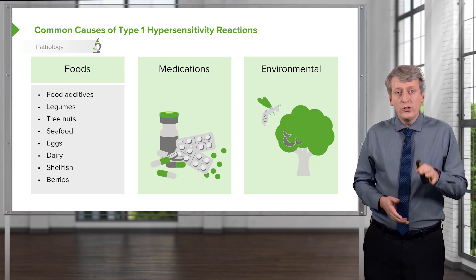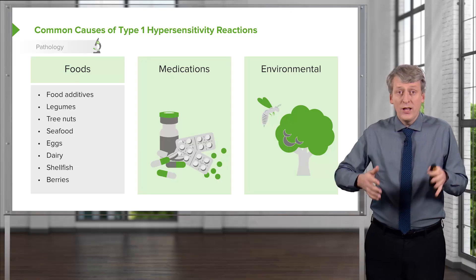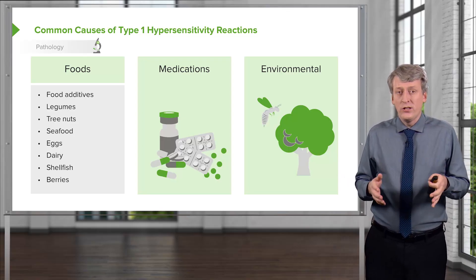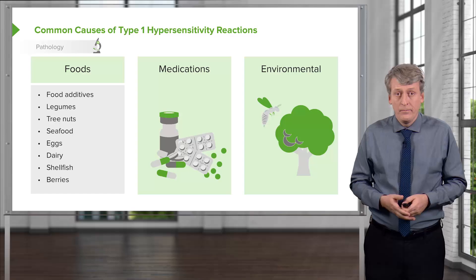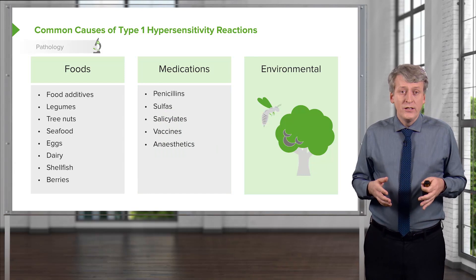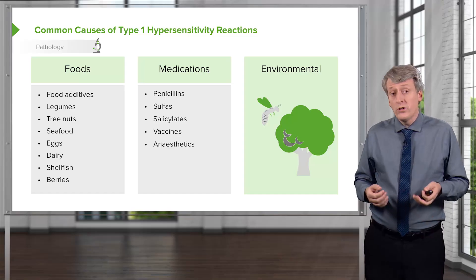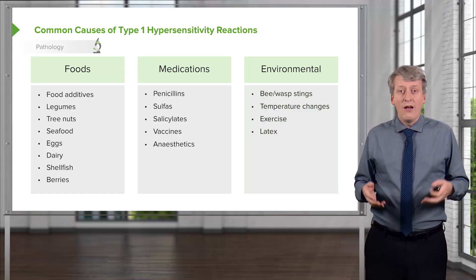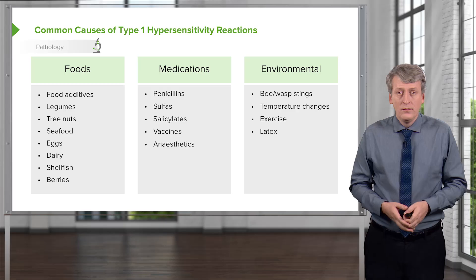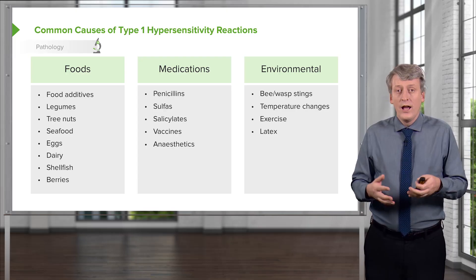Among children who have type 1 hypersensitivity reactions to food, about 85% of them are to food when we know what the allergen is. Still, at least a third of the time, we have no idea what triggers the allergy. Patients can also be allergic to medications — penicillins and sulfas are the most common, but they can also be allergic to salicylates, certain vaccines, or anesthetics. Patients can also have environmental allergies; bee stings and wasp stings are particularly problematic. Patients may be allergic to temperature changes, exercise, or latex.